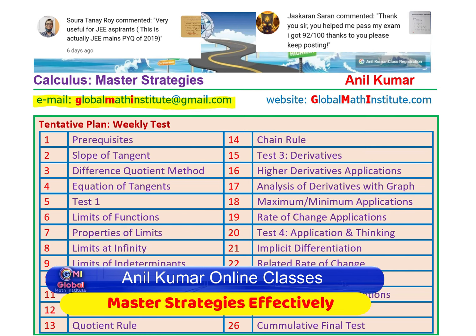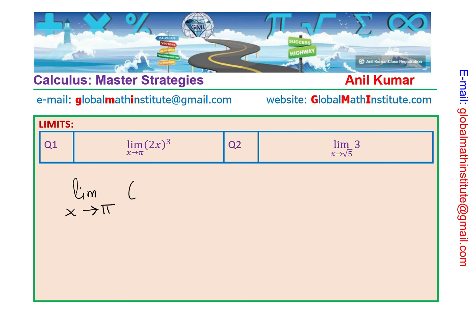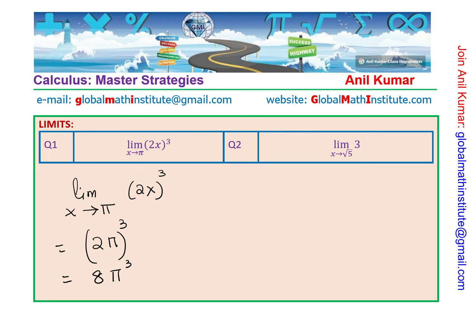In the following videos, I will also share some other questions you should know when you want to understand calculus. Let's begin with the first two questions, which are relatively straightforward. In question number one, we have limit when x approaches the constant pi and the function is 2x whole cube. You can substitute pi here and what you get is 2π whole cube, which gives you the solution 8π³ as the answer.